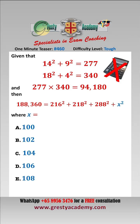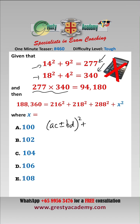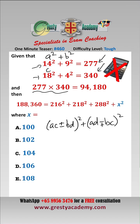Brahmagupta's identity says that if two numbers can both be written as the sum of two squares, then their product can also be written as the sum of two squares in two ways: (AC ± BD)² + (AD ∓ BC)², where A and B are the components of the first number and C and D are the components of the second.